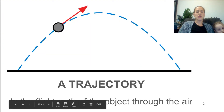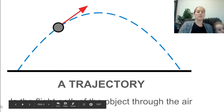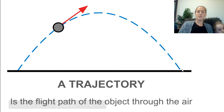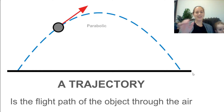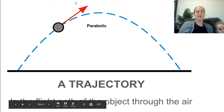The trajectory is the path that the projectile flies through. It's shown here by these blue dotted lines — that is the path that the ball flew through the air. This shape is parabolic, which basically just means this nice arc shape.